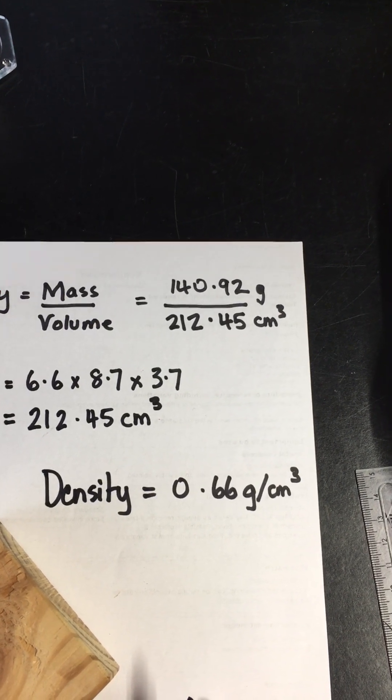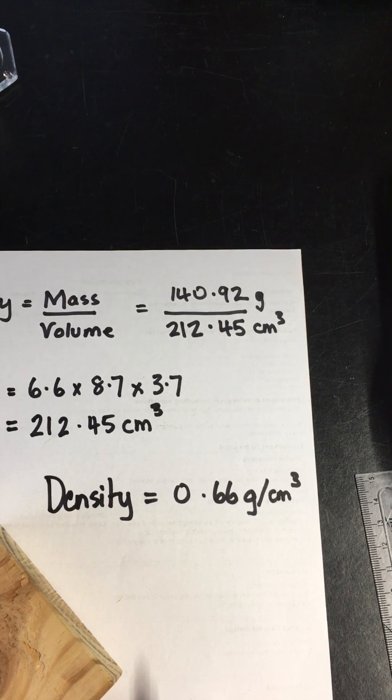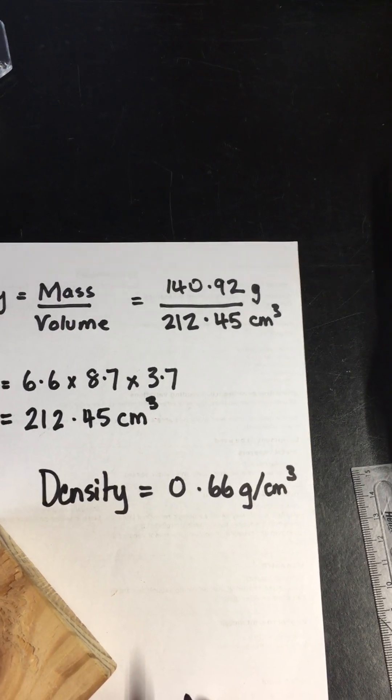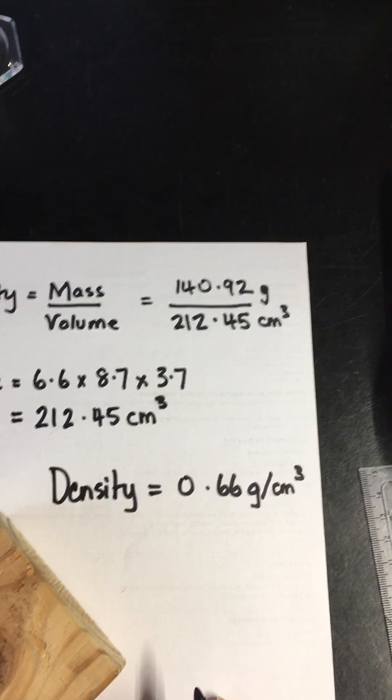1.00 grams per centimeter cubed. So if water is more dense than this wood, the wood will float on top of the water.